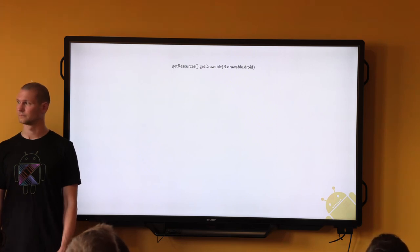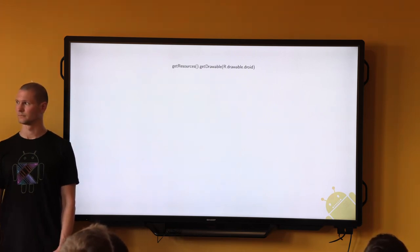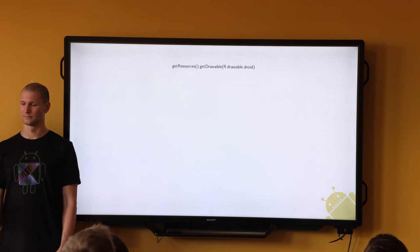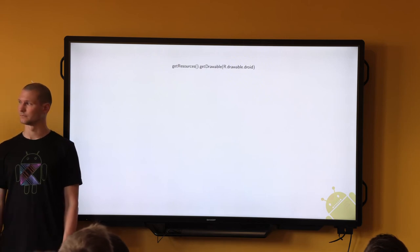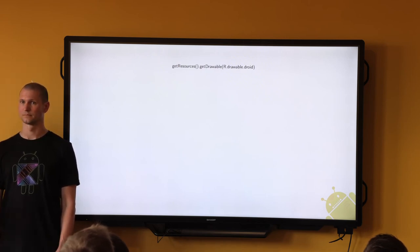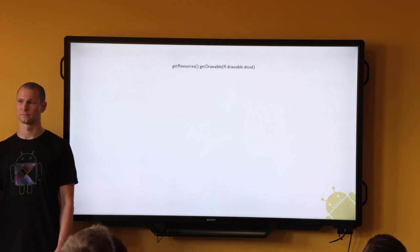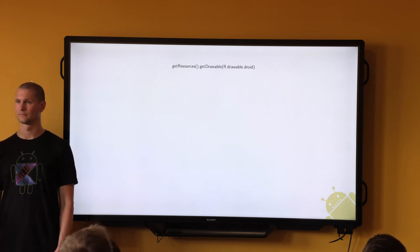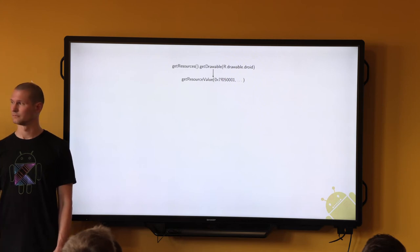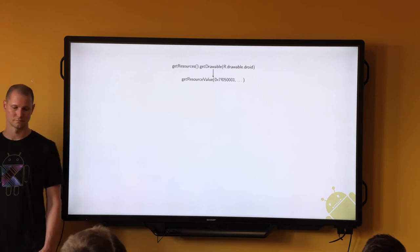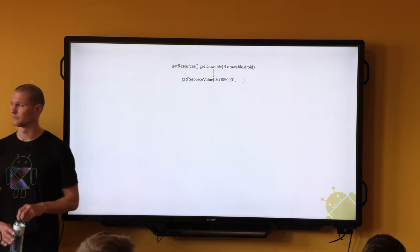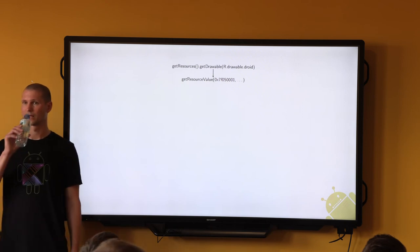Doesn't this slide look familiar? That's because there were no changes to the existing APIs. You would continue acquiring resources the way you used to — get your resources object, call a proper getter on it, use the type and name of the resource you want from the R class. The appropriate JNI call will be made with the resources identifier acquired from the R class.